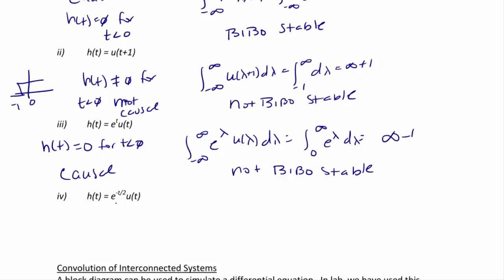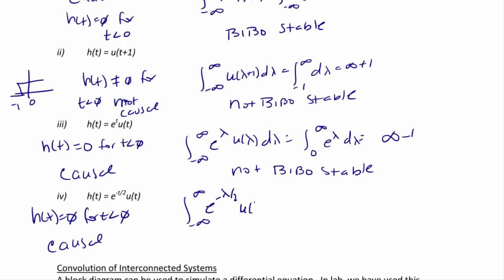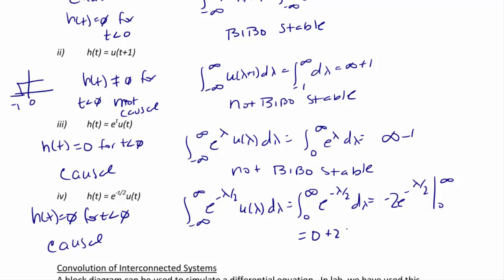Let's look at one more: h(t) equals e^(negative t over 2) times u(t). Since it's multiplied by u(t), h(t) equals zero for t less than zero, so this system is causal. To determine BIBO stability, the integral from negative infinity to positive infinity of e^(negative lambda over 2) d-lambda equals negative 2 times e^(negative lambda over 2) evaluated from 0 to infinity, which equals 0 plus 2, which equals 2. So yes, this system is BIBO stable.